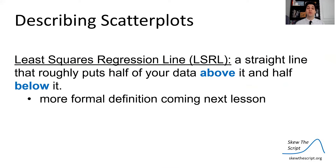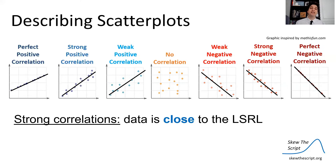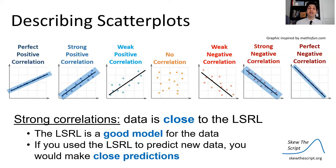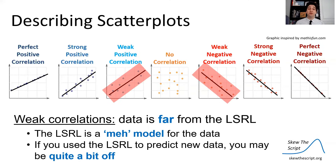The line model I just described is called the least squares regression line — a straight line that roughly puts half the data above it and half below it. We'll get into a more specific definition in a later lesson. Strong correlations occur when data is close to the least squares regression line, meaning our model is a good fit and predictions would be fairly accurate. A weak correlation is when data is far from the line — it still has a trend, but the spread is large, so predictions might be off.